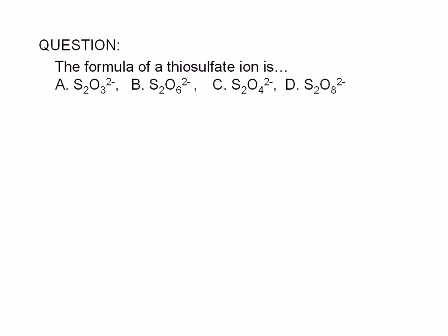The formula of a thiosulfate ion is: A) S2O3 with a negative 2 charge, B) S2O6 with a negative 2 charge, C) S2O4 with a negative 2 charge, or D) S2O8 with a negative 2 charge.